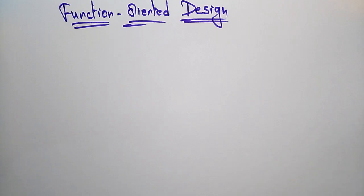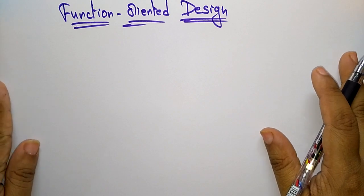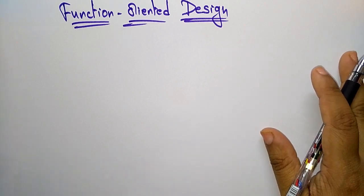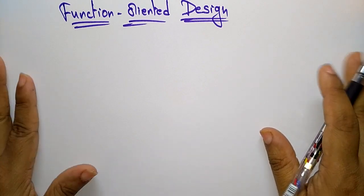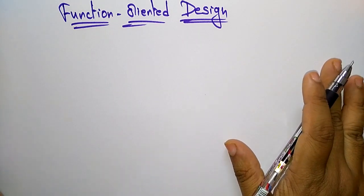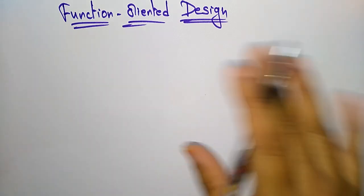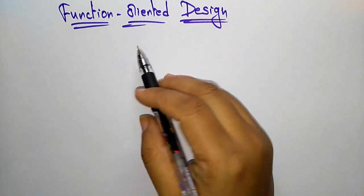Hi students, coming to the next topic in the subject software engineering: function oriented design. There are mainly two concepts in the designing process — one is function oriented and another is object oriented — and also user interface design. So these are all the different types of designing concepts.